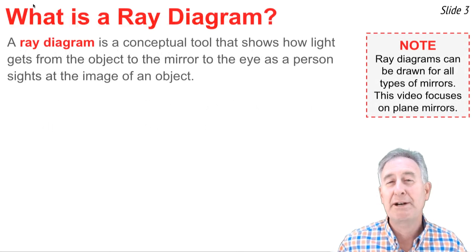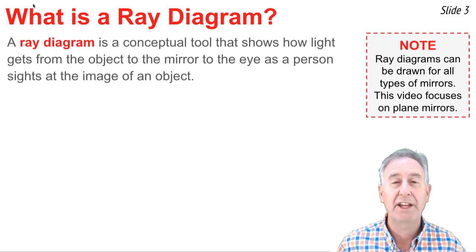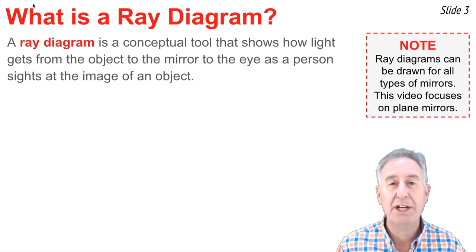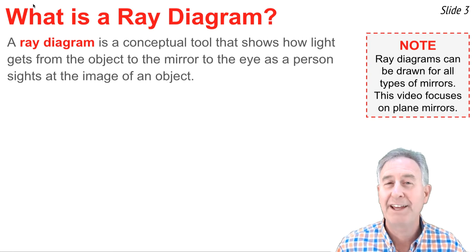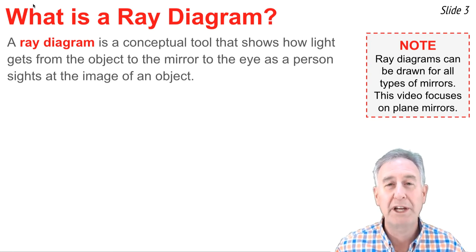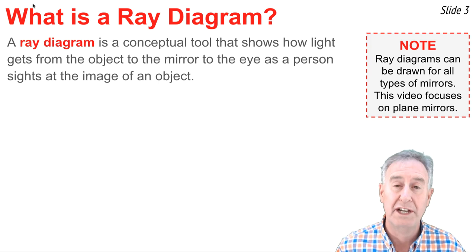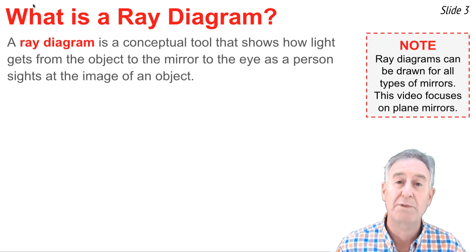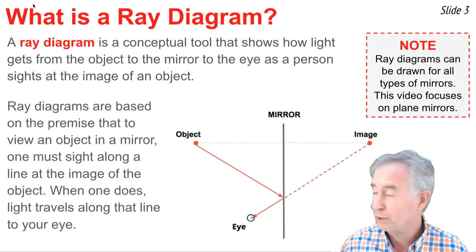A ray diagram is a conceptual tool that shows how light gets from the object to the mirror to the eye of a person as that person sights along a line at the image of an object. You can draw ray diagrams for any type of mirror. In this video, we're going to discuss ray diagrams for plane mirrors.